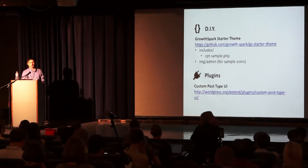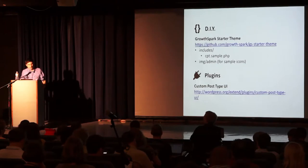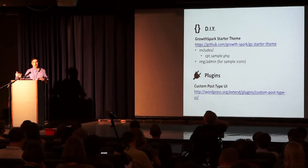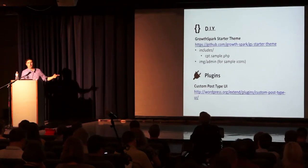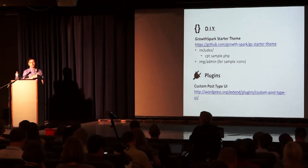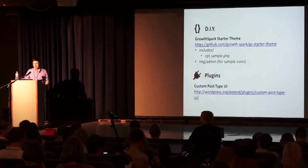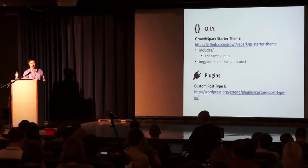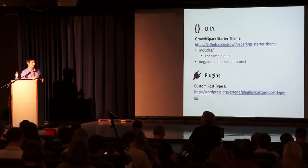You want to create custom post types whenever possible for any type of content that your client is going to want to manage. You can do it fairly easily in PHP — we have an example file called CPTSample in our starter theme where you can just copy it, change a few values, and you've got a new custom post type. We also have a collection of icon images you can use for each tab, which further personalizes the user experience. If you're not a coder, there's a great plugin called Custom Post Type UI that lets you create any number of custom post types pretty much in a matter of minutes with a really intuitive user interface.